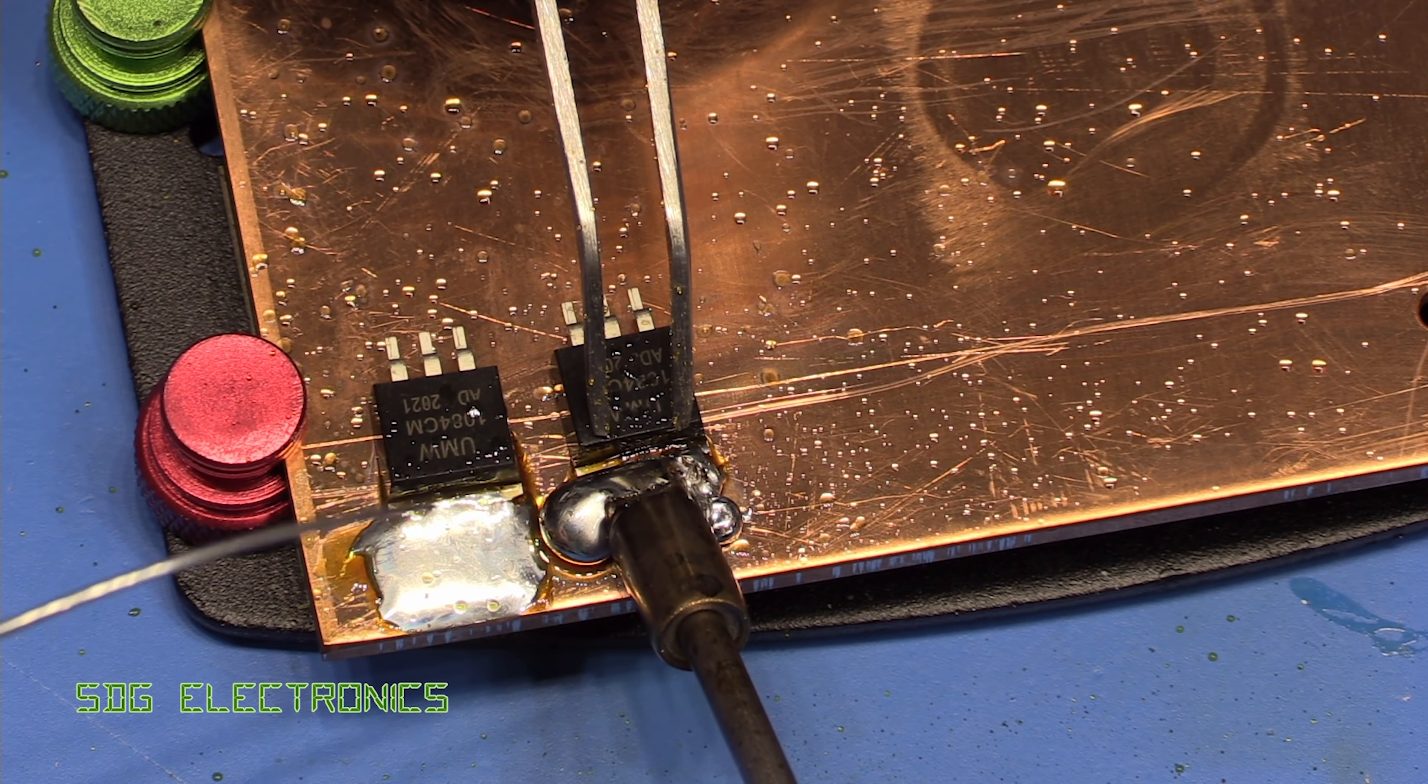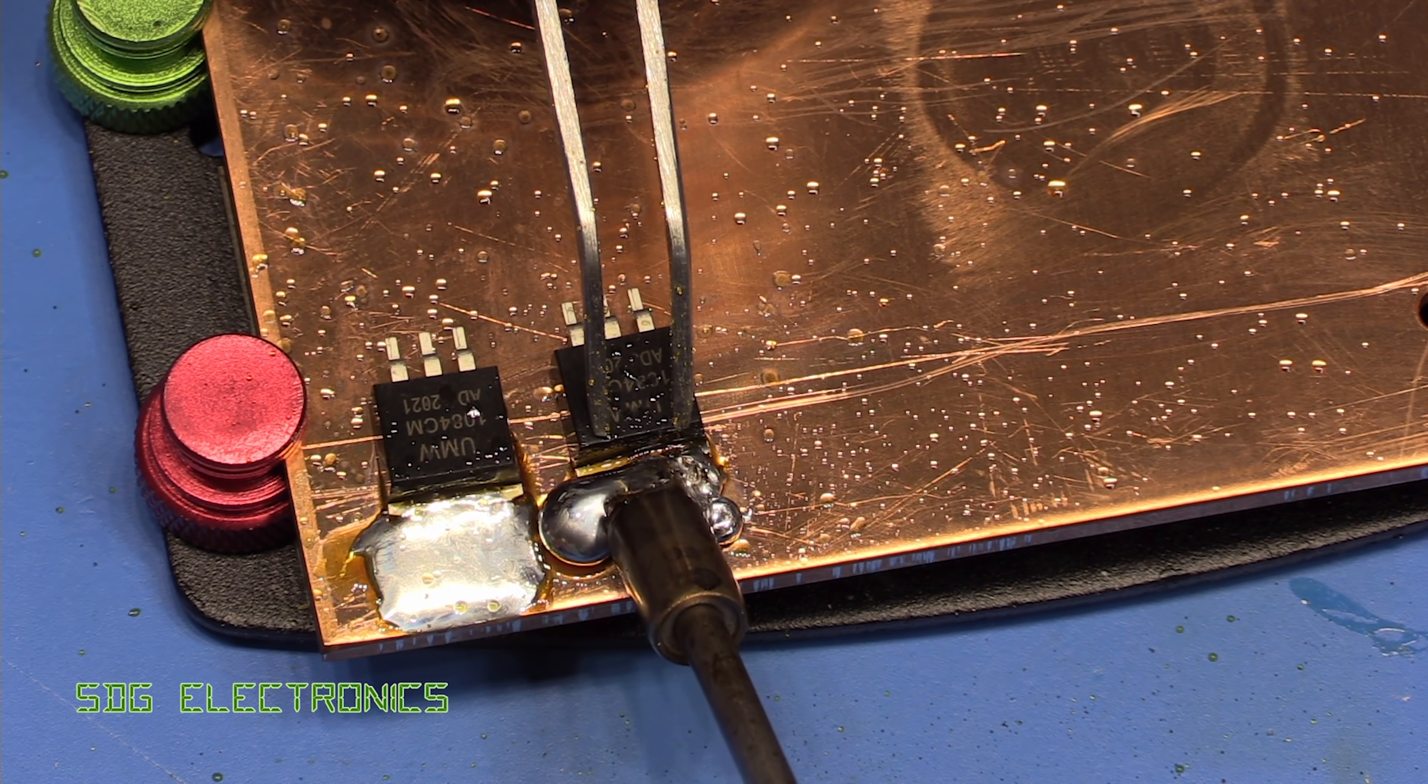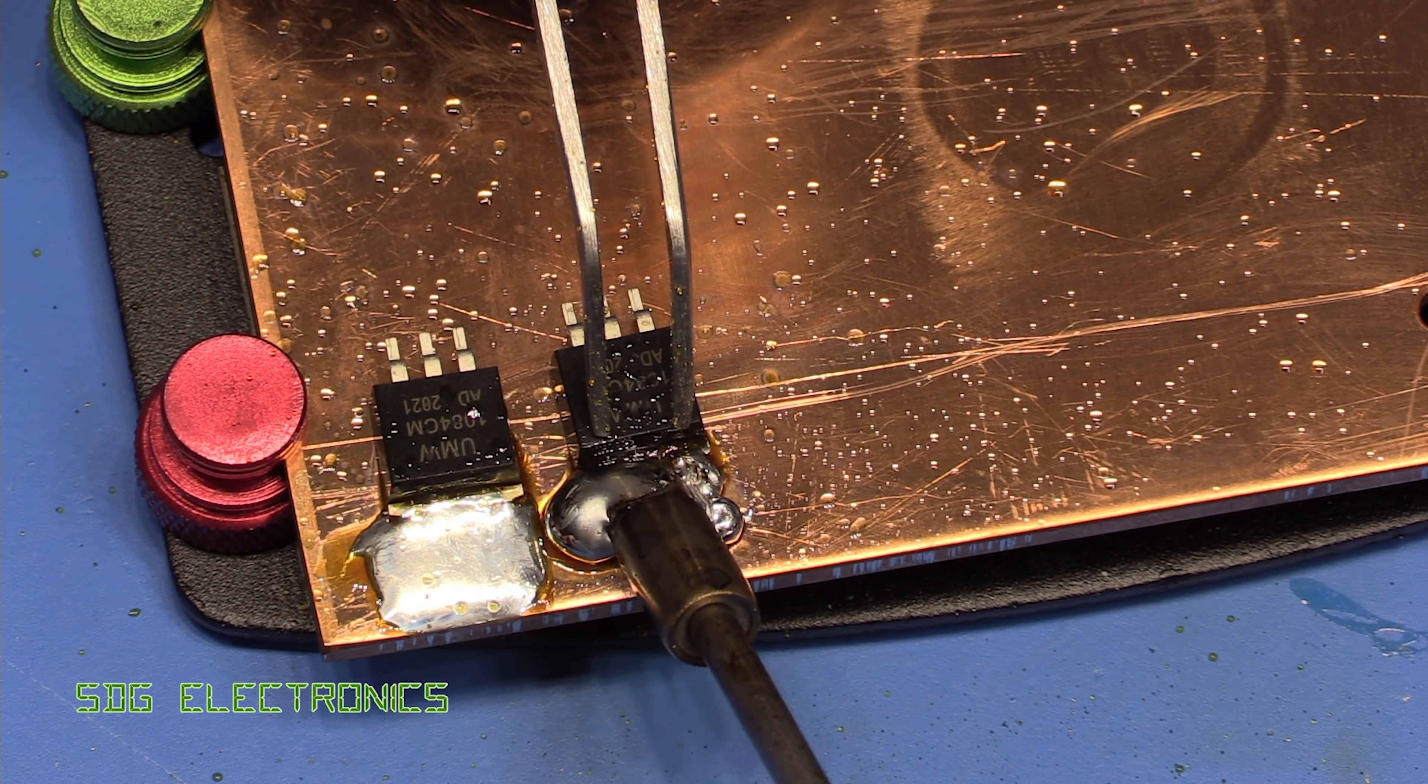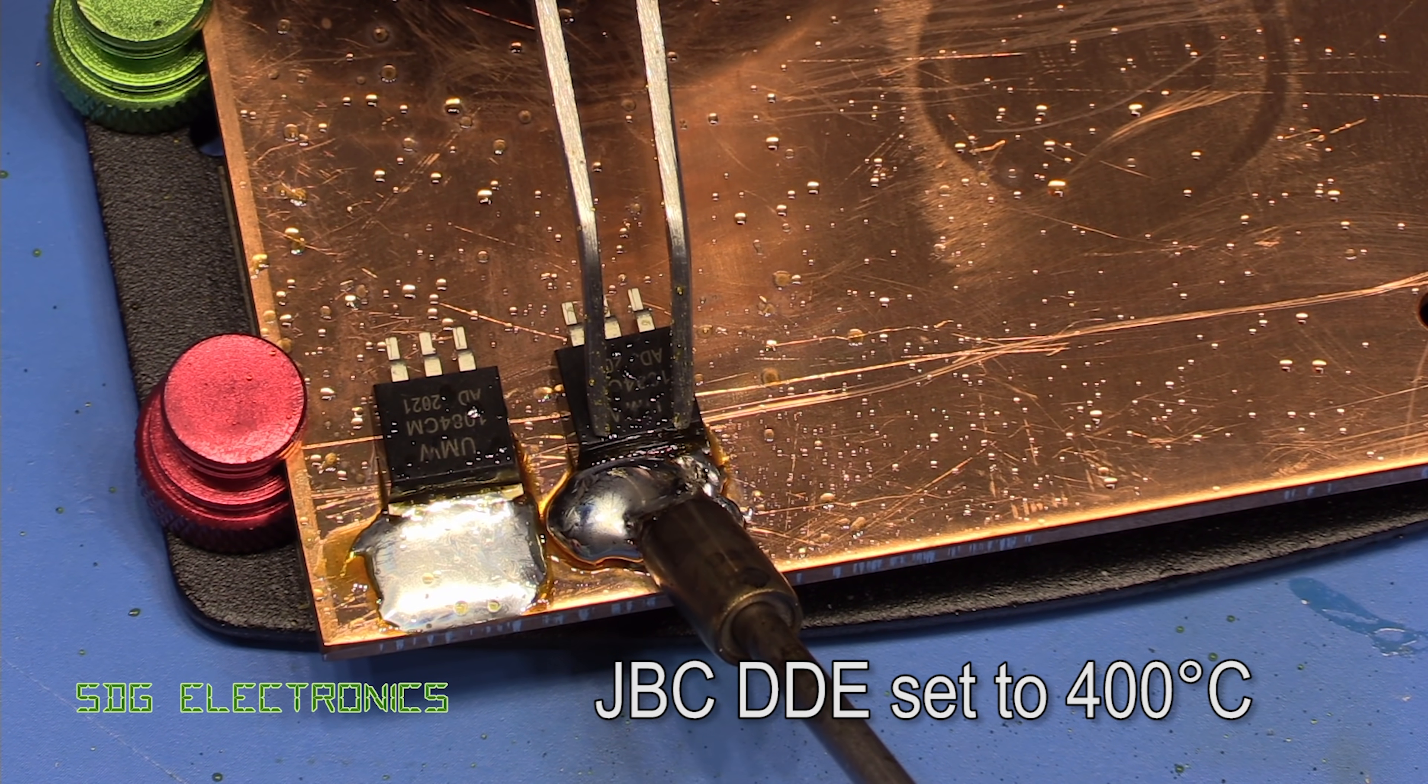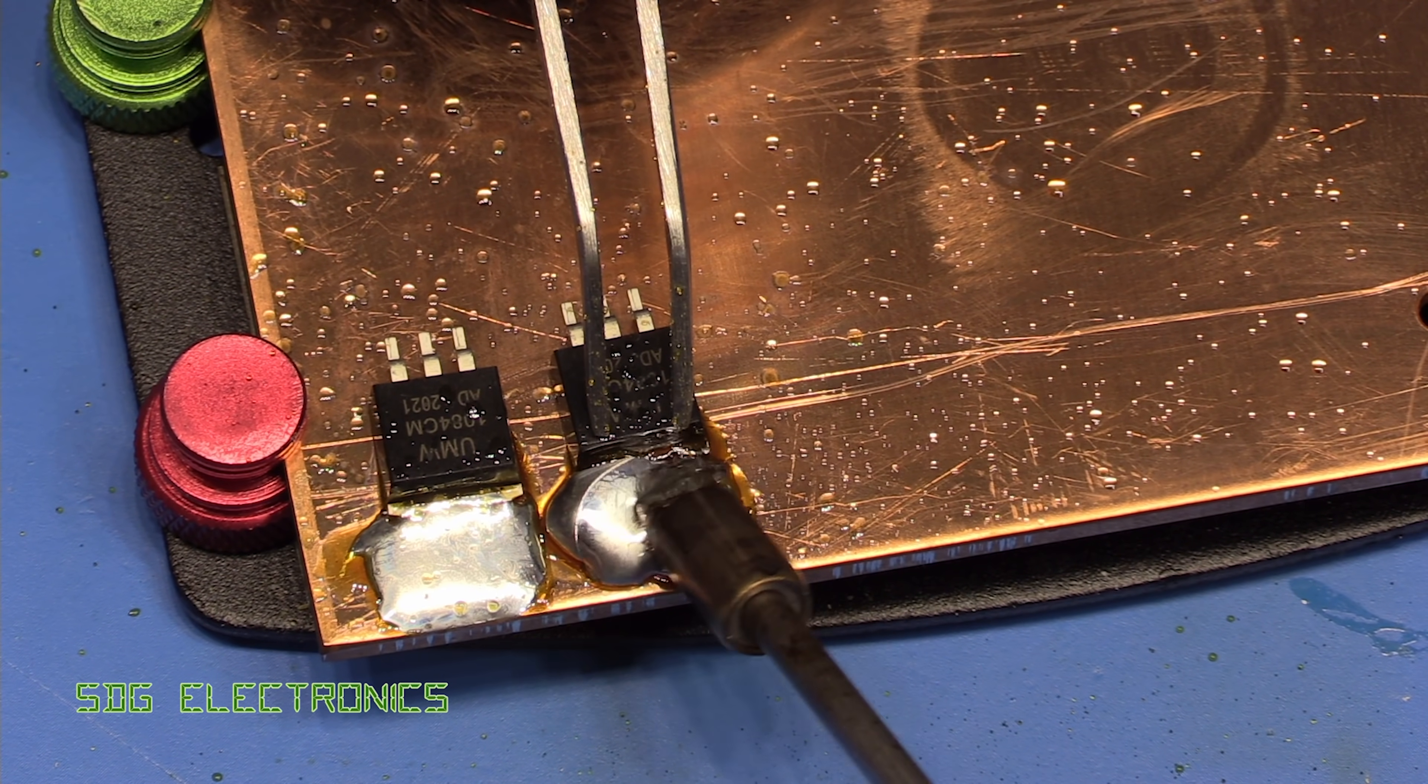You can see that's already doing significantly better than the Pace was. And something's starting to happen. So it's just melted that blob that was just solidifying before with the Pace system. The readout on the front of the JBC is maximum power into this tip. So it's putting about 120 watts probably into this.